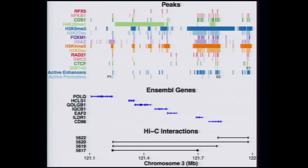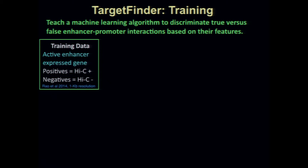The approach we've been using is supervised machine learning. We need training data — some examples of promoters and enhancers that are active in a cell type and in physical proximity to each other, and some that are active but not physically interacting. We have feature data from which we try to learn a model. By holding out some data, we can evaluate how well we predict on held-out data through cross-validation. If we succeed, we can make predictions beyond our training data with some confidence in accuracy.